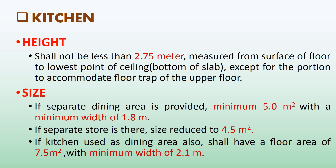Regarding kitchen size: where a separate dining area is provided, the kitchen area shall not be less than 5.0 square meters with a minimum width of 1.8 meters. Where there is a separate store, the area may be reduced to 4.5 square meters. A kitchen intended for use as a dining area as well shall have a floor area of not less than 7.5 square meters with a minimum width of 2.1 meters.